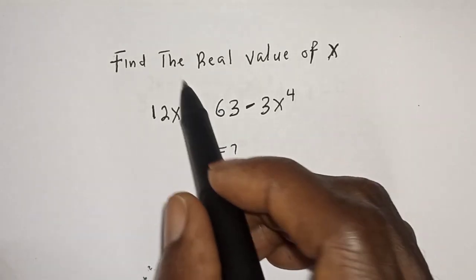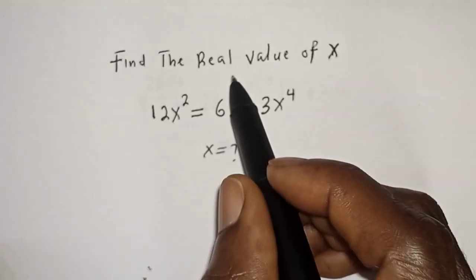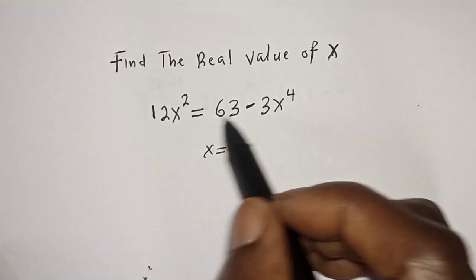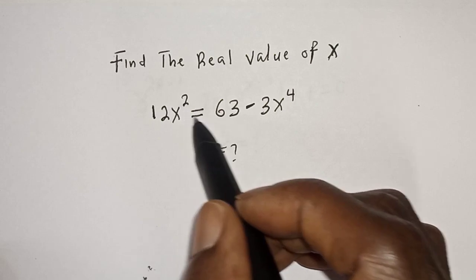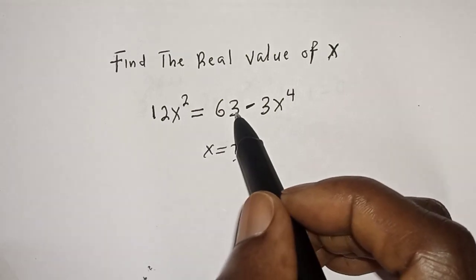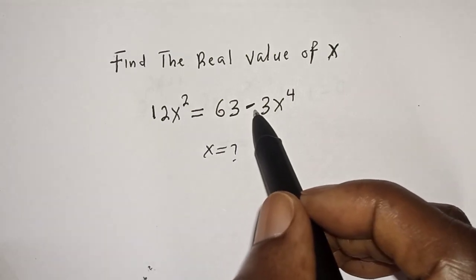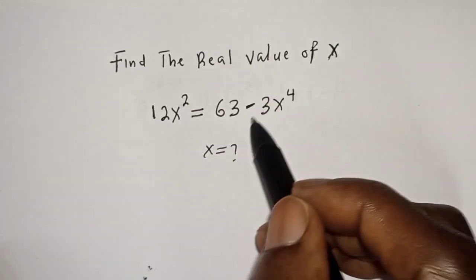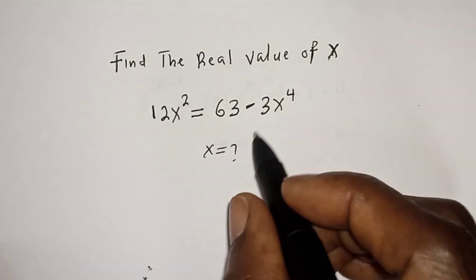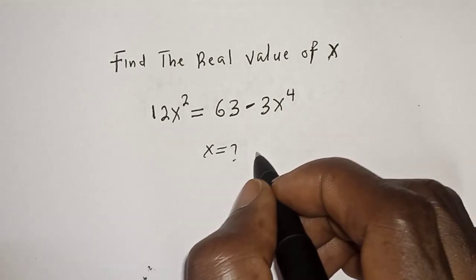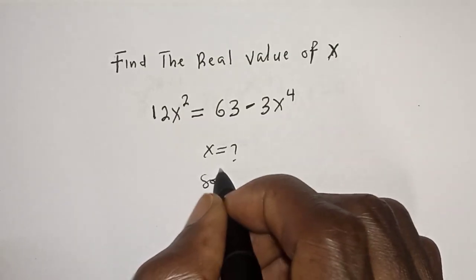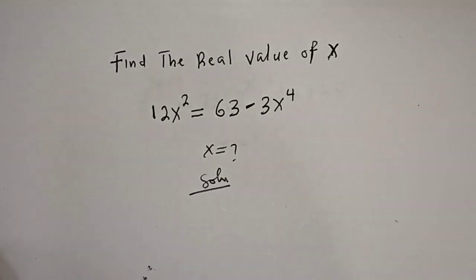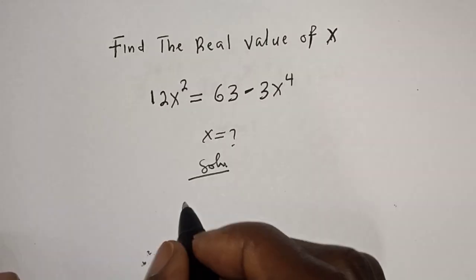Hello, welcome to Magis. In this class, we want to find the real value of s from this equation: 12s² is equal to 63 minus 3s raised to the power 4. Like, share, comment and subscribe.